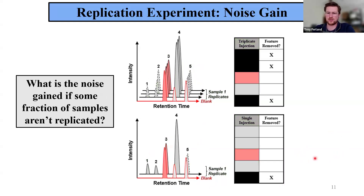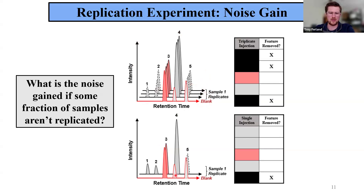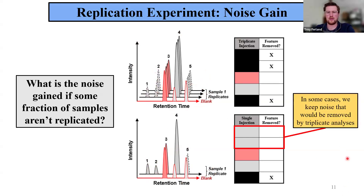Information loss isn't the only concern. In other cases, reducing sample replication can result in keeping occurrences and features that would have originally been removed. Looking back at sample one with only the first sample replicate, we no longer fail features one and two — originally removed because of replication and variance thresholds. When we reduce our replication, features one and two now exceed our threshold because we can't measure variance on a single point, and it's all or nothing for replication. So we would keep noise that would otherwise have been removed with the triplicate.